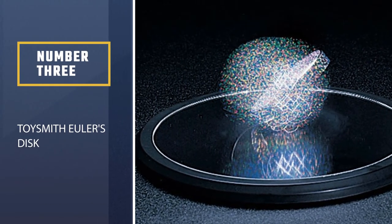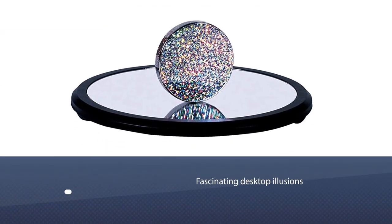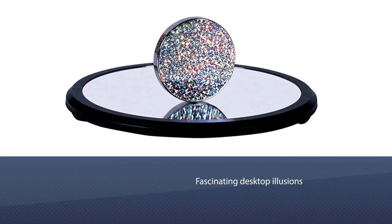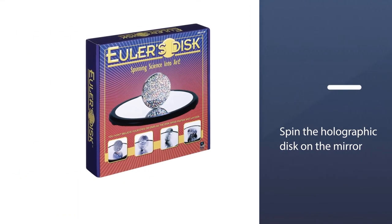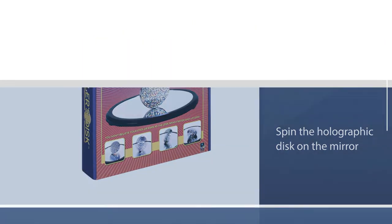Number 3: ToySmith Euler's Disc. Fascinating desktop illusions. Spin the holographic disc on the mirror. Does it speed up? Listen to its rhythmic sounds. Why does the humming get louder as the speed of the disc increases?